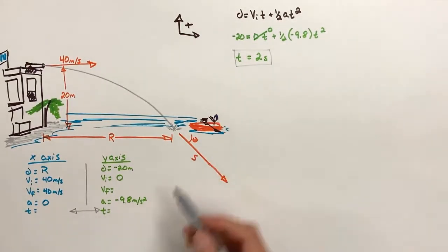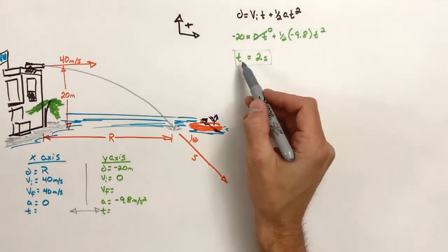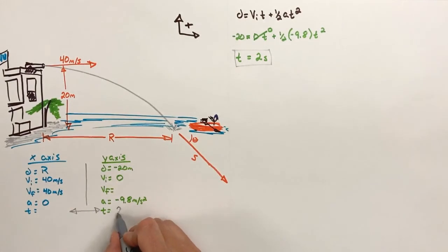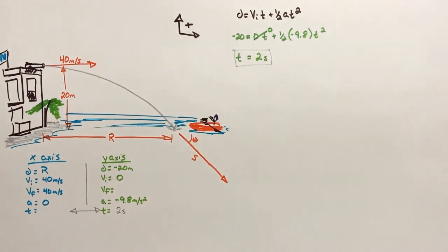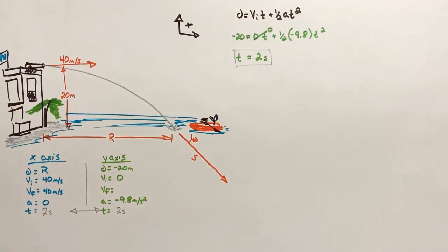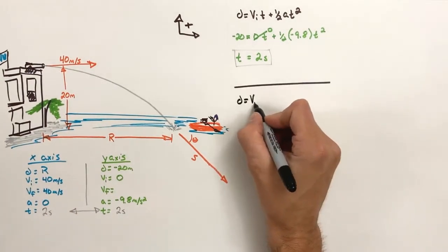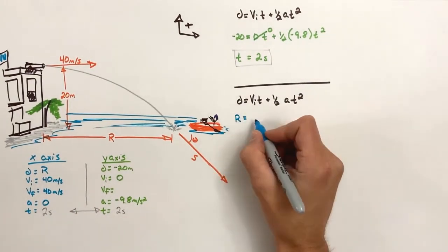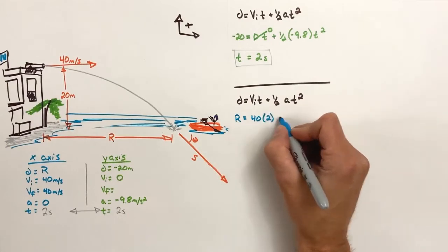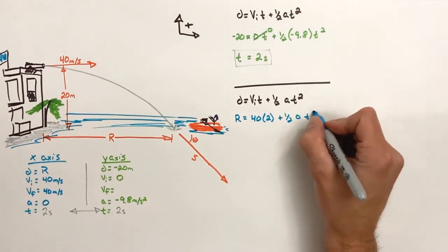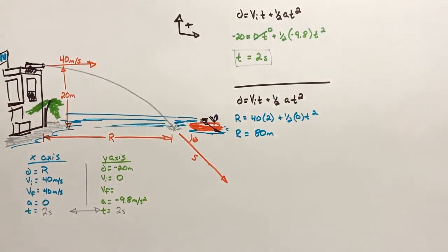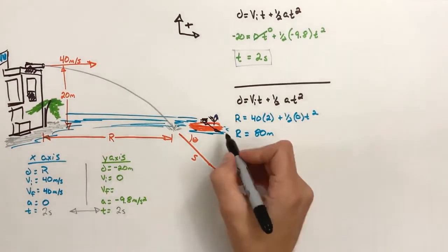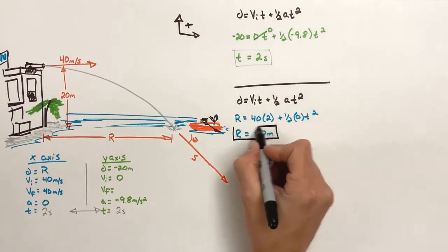Time is the only value that's shared between the two axes. That means the shell was moving horizontally for two seconds. Applying the kinematic equations to the horizontal axis, we find the shell travels 80 meters horizontally before striking the water.